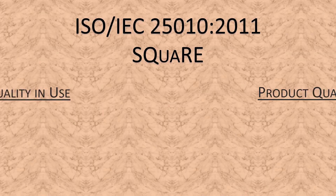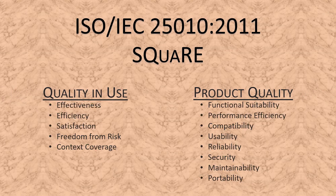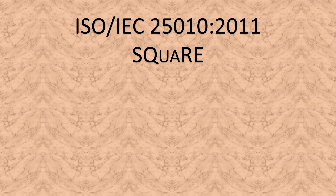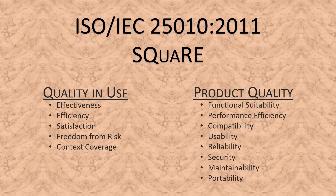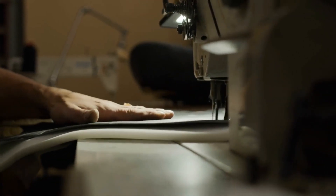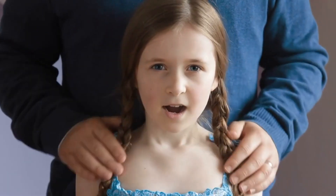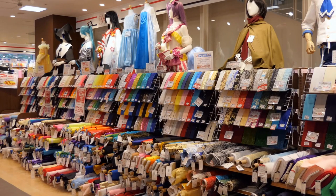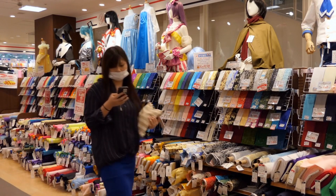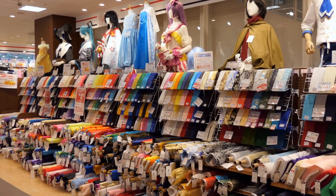Remember when I told you SQuaRE contains two models, Quality-in-Use and Product Quality? Why, it's story time. My mother sewed dresses for my sister when she was a wee brat — she's an adult brat now. I can clearly remember being dragged to the fabric store on a regular basis, spending what felt like months at a time for the hour or so we were in the store. To this day, the smell of these places brings back memories.